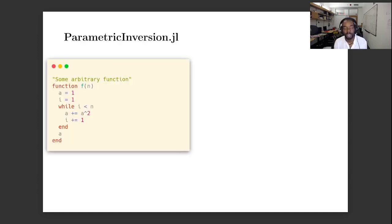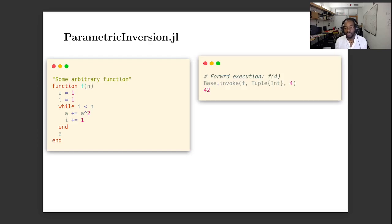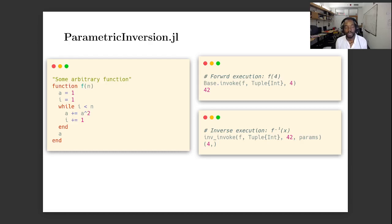So what we're working on is a package called parametric inversion.jl. The basic idea is that you write down a normal Julia function, we can apply that function to some input, but the key thing is that we can use this function inverse invoke which executes the inverse function on some particular input and some parameters which I'll describe in a moment.